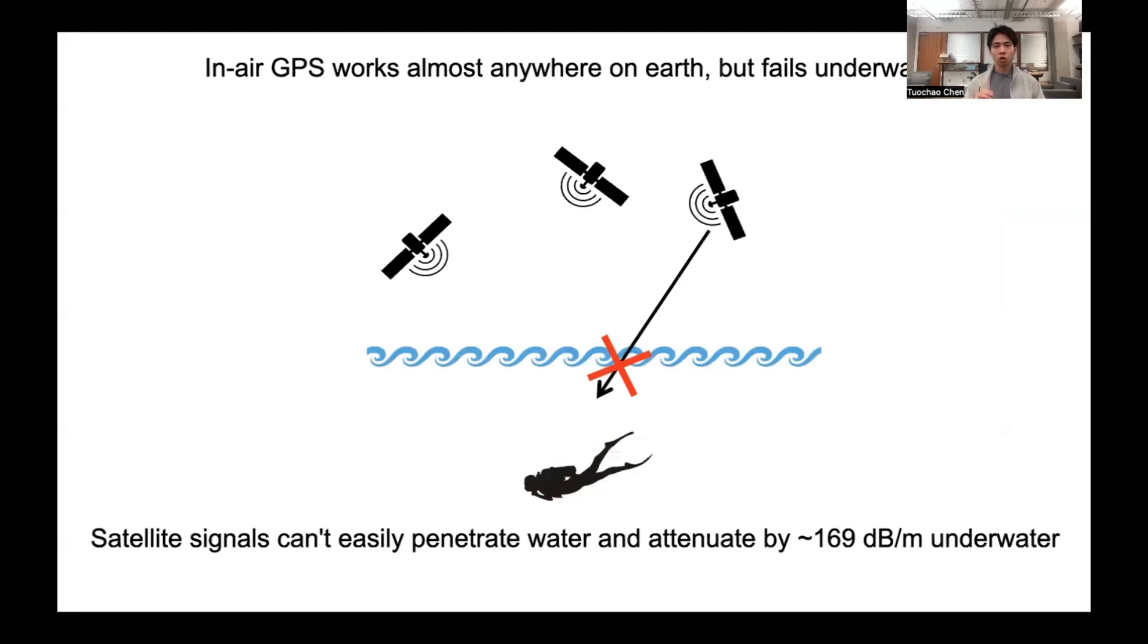Air GPS, which provides positioning almost everywhere on Earth, unfortunately fails underwater. This is because the satellite signal cannot easily penetrate the water and attenuates very quickly.